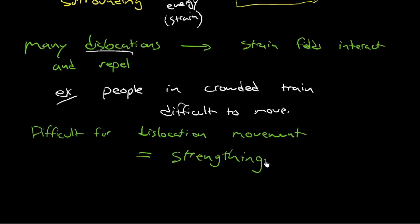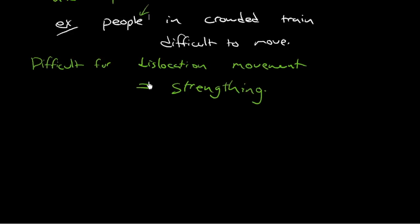Difficult for dislocation movement means we've strengthened it. So how do you get more people on a subway? You put more people on. How do you get more dislocations in a material? Well, that's the interesting thing. You'll have to just take my word for it on this point. But plastic deformation, you can look up the mechanism if you like. Plastic deformation creates more dislocations.